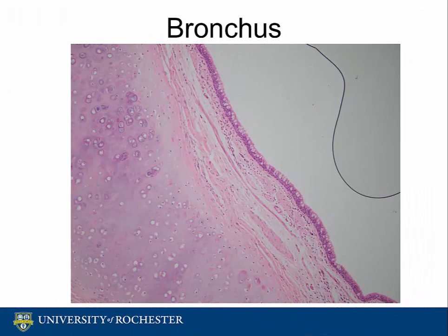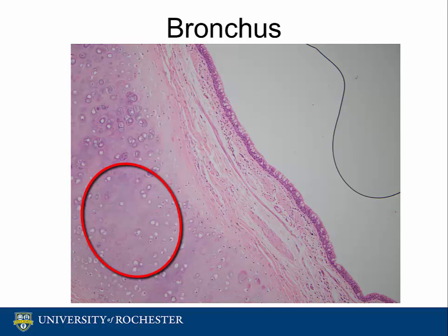The final image depicts a bronchus. The bronchi are greater than 1 cm in diameter and connect the trachea to the bronchioles within the hilum of the lung. Unlike the bronchioles, the bronchi are also surrounded by a layer of cartilage in addition to smooth muscle and connective tissue.